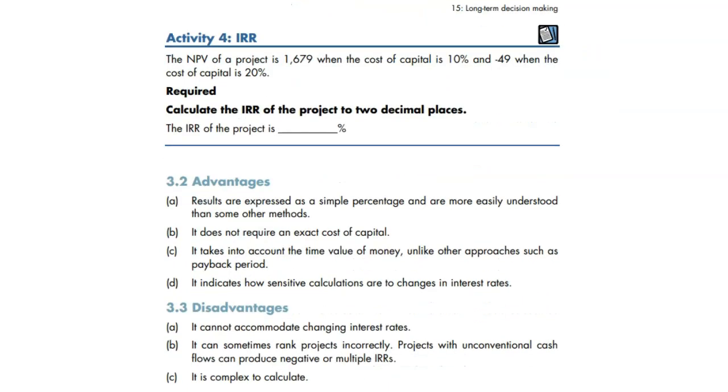We have a very small activity. Let's do it. We have a positive NPV percentage is 10. Negative NPV 49% is 20. So let's do it. We're going to do A plus NPV A over NPV A minus NPV B times by B minus A. That is the formula. You need to learn it by heart.